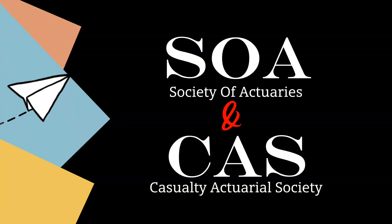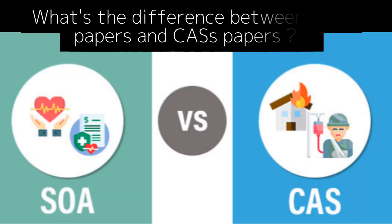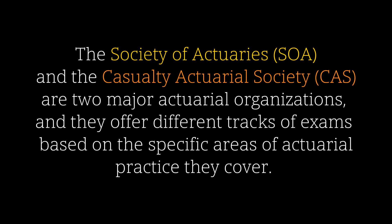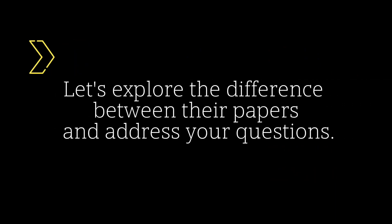Hi, in this video I'm going to explain the difference between SOA papers and CAS papers and some frequently asked questions about it. The Society of Actuaries and the Casualty Actuarial Society are two major actuarial organizations, and they offer different tracks of exams based on the specific areas of actuarial practice they cover. Let's explore the differences between their papers and address your questions.